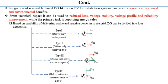However, integrating renewable-based DG, like solar PV, into the distribution system can create economical, technical, and environmental benefits. From a technical aspect, it can be used for reduction of losses, improvement of voltage stability and profile, as well as reliability improvement, while the DG is supplying energy.